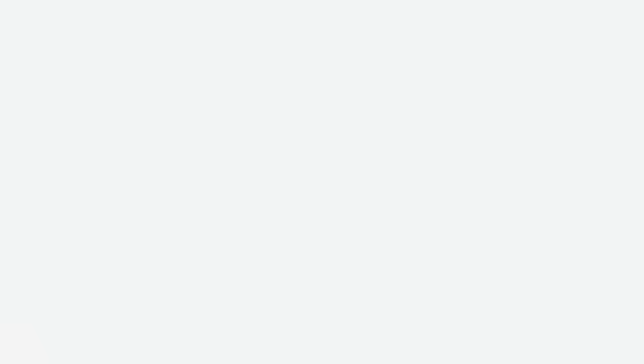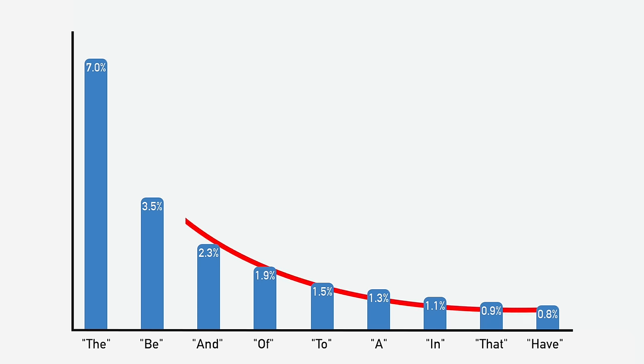We can figure this out. In the English language, the most common word, the, accounts for about 7% of all word occurrences. The second most common word, be, accounts for about 3.5% of all words. Then and is about 2.3%, and so on and so forth. The distribution of words, it turns out, in all languages follows a logarithmic scale. The second most common word occurs about half as frequently as the most common. The third one third as often, the fourth one fourth as often, the fifth one fifth as often, and so on and so forth.